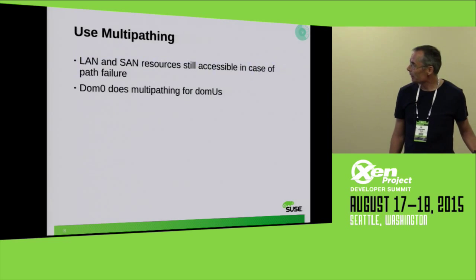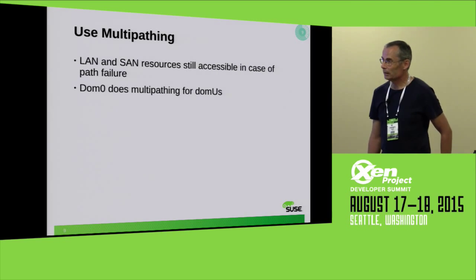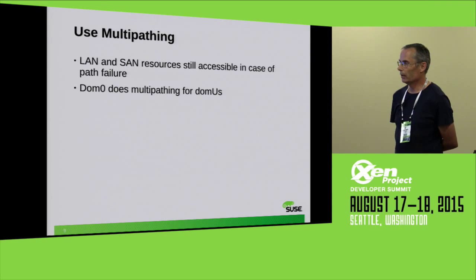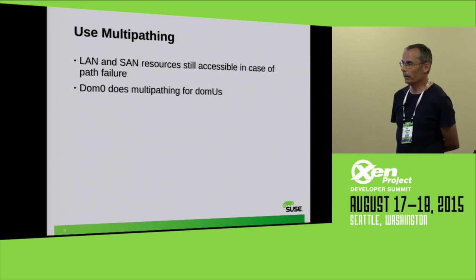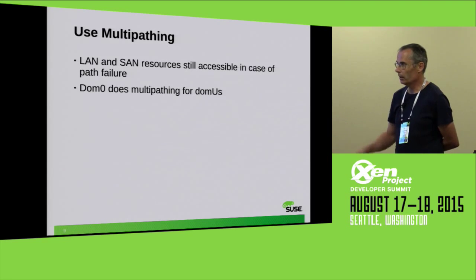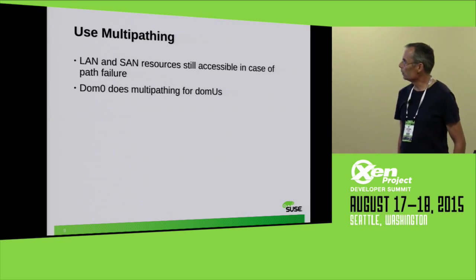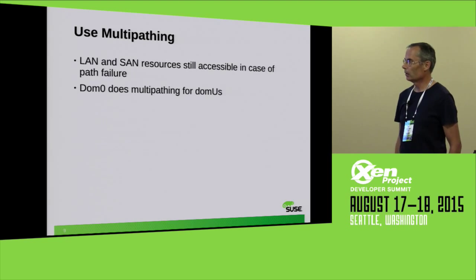What's very easy is to use multipathing for the peripherals. We can have LAN and SAN resources connected via multiple paths, and in case of a path failure, the kernel — in this case DOM0 — will switch the paths and the peripherals are still accessible. The user domains don't have to support this; it's DOM0 supporting this because normally all peripherals are driven by DOM0.